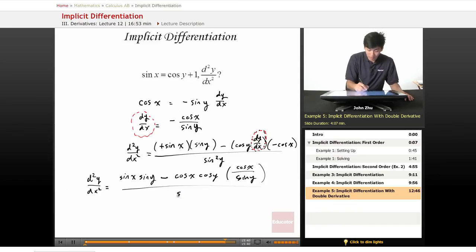And all this is divided by sine squared of y. And we can rewrite this a little bit, simplifying it. Sine of x times sine of y minus cosine squared x times cosine of y, all over sine cubed y.